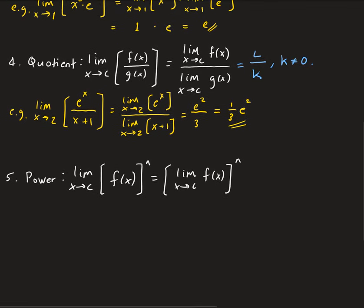The fifth property is the power rule for limits. What this says is: if we have the limit of a function raised to the nth power, that's the same as taking the limit of the function first as X approaches C, and then raising it to the power n. So we end up getting L raised to the power n.